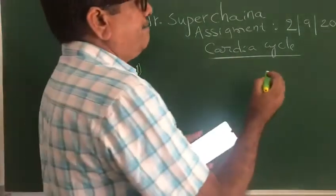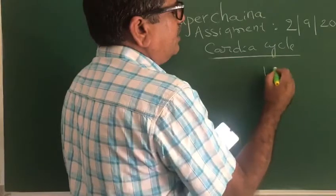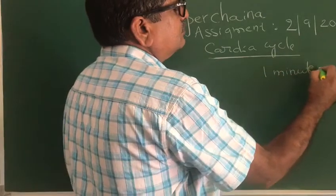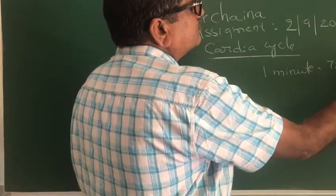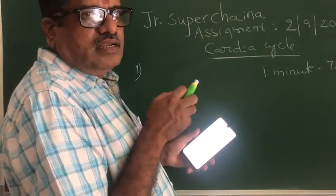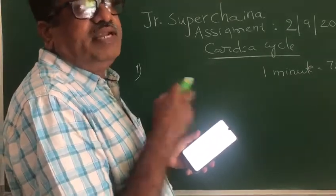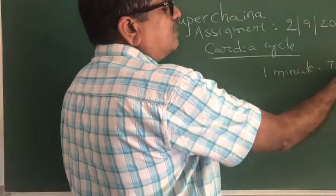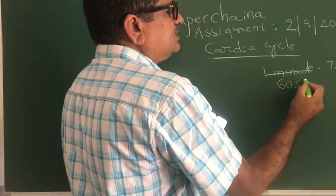Normally, in one minute, a healthy man has 72 beats. The cardiac cycle is the duration of all the events occurring in one beat. So normally 72 beats occur in one minute, which means 60 seconds.